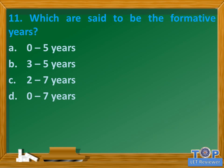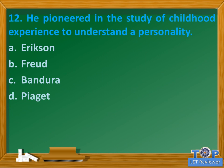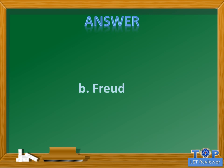Question number eleven: which are said to be the formative years? A) 0 to 5 years, B) 3 to 5 years, C) 2 to 7 years, D) 0 to 7 years. Answer: A) 0 to 5 years. Question number twelve: he pioneered in the study of childhood experience to understand personality. A) Erikson, B) Freud, C) Bandura, D) Piaget. Answer: B) Freud.